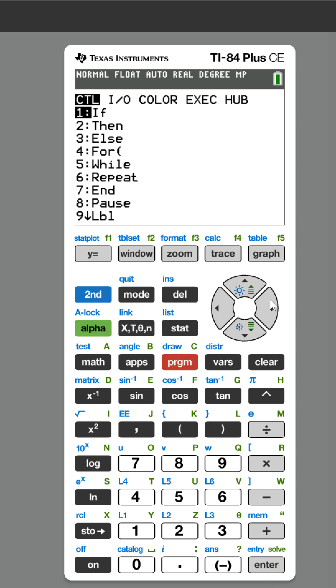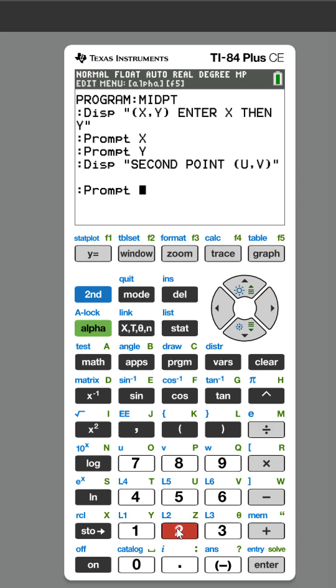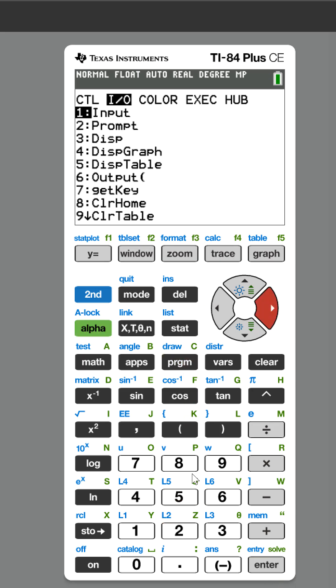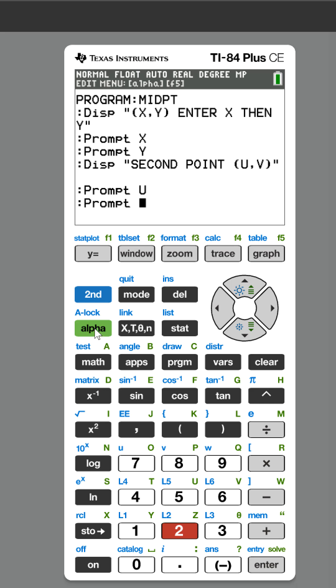We have to end with the quotation marks. Again we're going to ask them to put in the U, alpha U, and we're gonna prompt them for the V coordinate V.